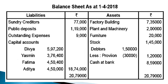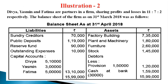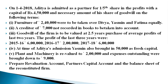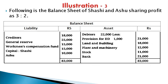Key points from Exercise 2: Reserve fund is distributed among old partners in old ratio. Goodwill is calculated using the average profit method — average of last two years profit multiplied by years of purchase. The new partner's share of goodwill is then distributed among old partners in their sacrificing ratio.